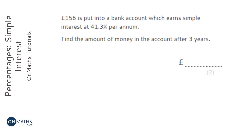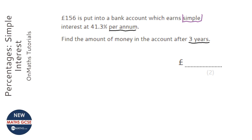We've got £156 in the bank account which is earning simple interest at 41.3% per annum. Per annum just means per year, so it's sitting in there for three years. The important point to highlight is the fact that it is simple interest, which means you calculate the percentage once and then it's the same amount every single year. So the first and most important thing we do is calculate 41.3% of 156.